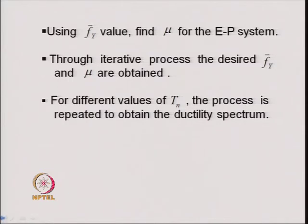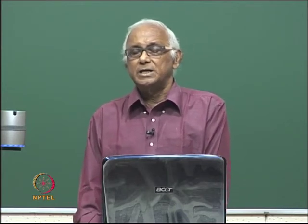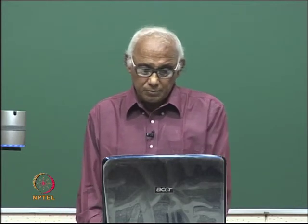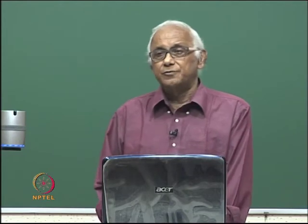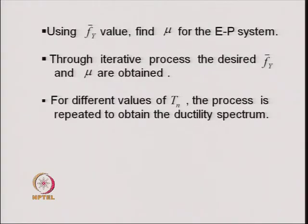Once we know the converged F̄_y, we can find F_y, then x_y, and thus D_y, V_y (= ω_n × x_y), and A_y (= ω_n² × x_y). This entire exercise is repeated for different values of time period T_n and we plot the ductility spectrum.